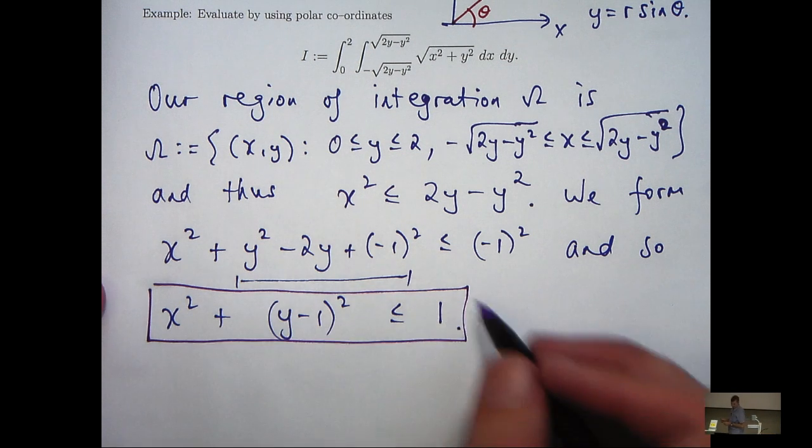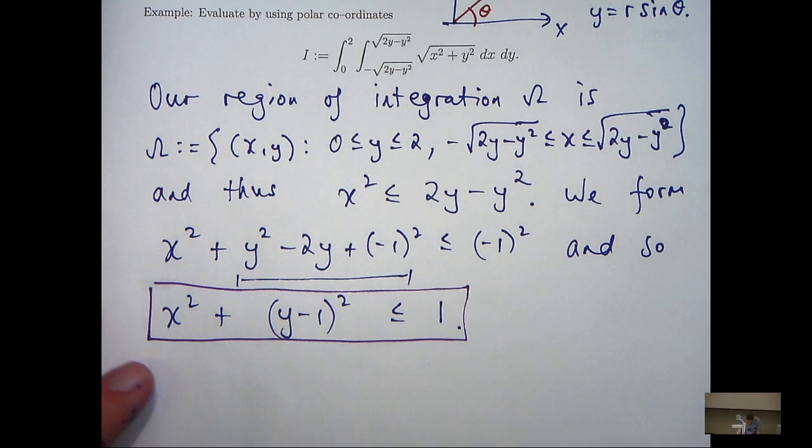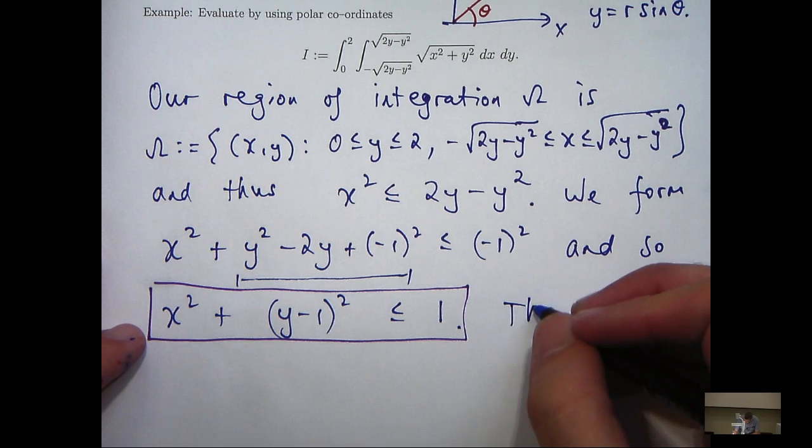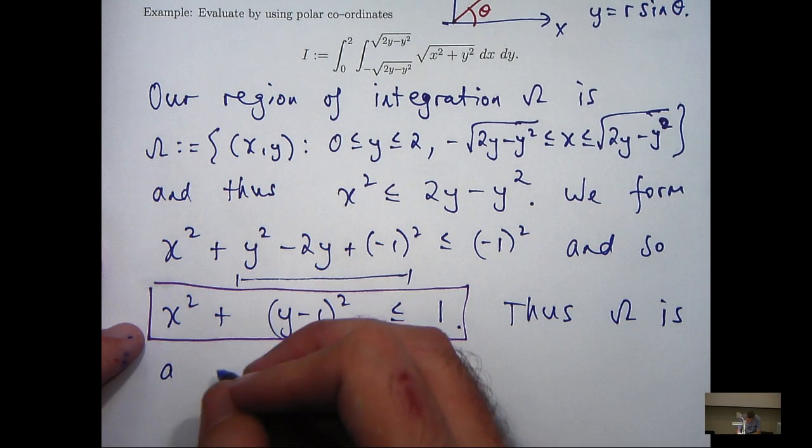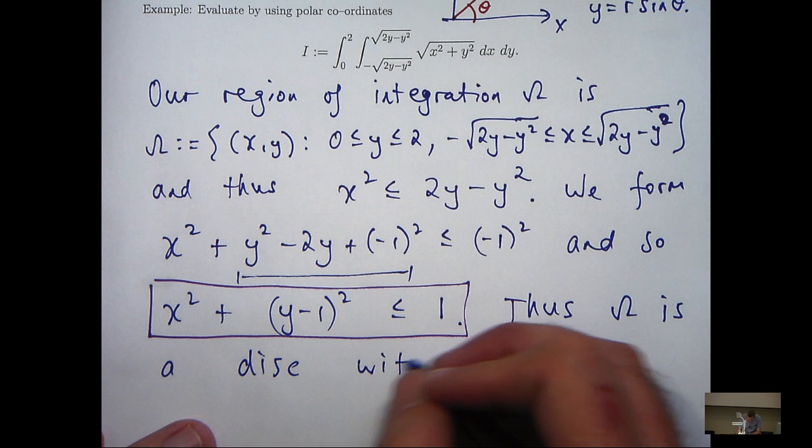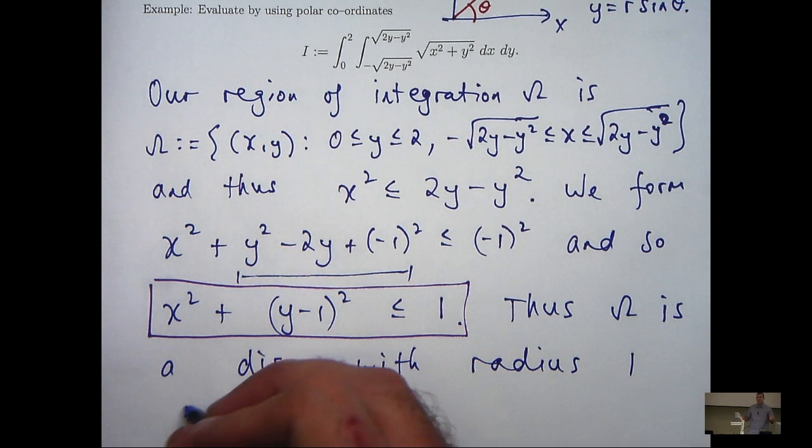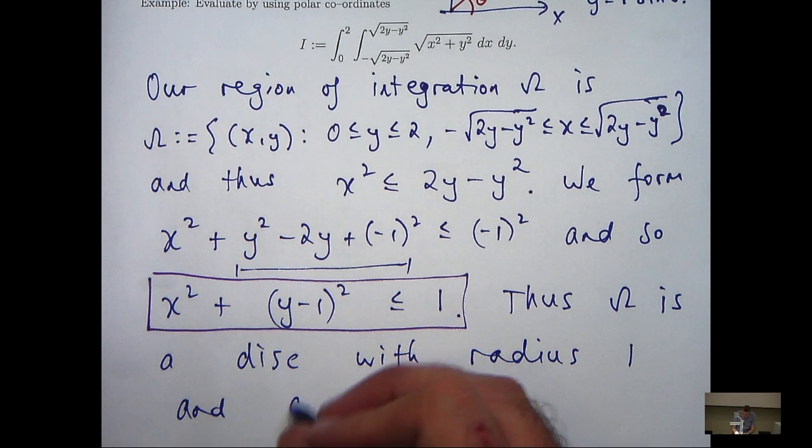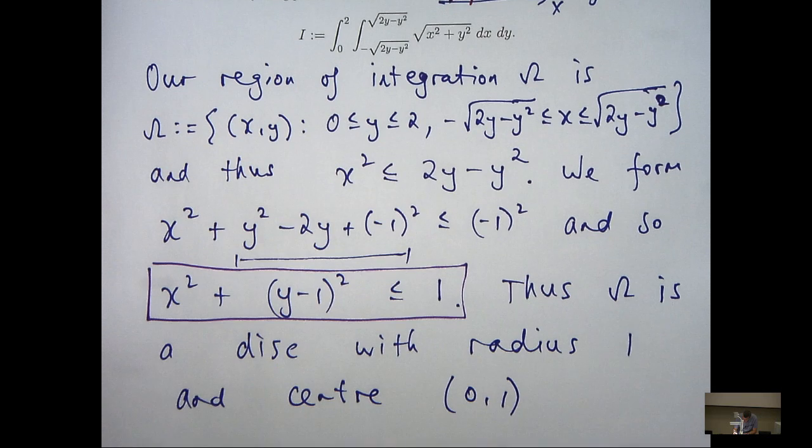Now, this looks a little bit like the equation for a circle, but remember we have an inequality sign here. So this is actually an inequality that represents a disk with radius 1 and center at x equals 0, y equals 1.